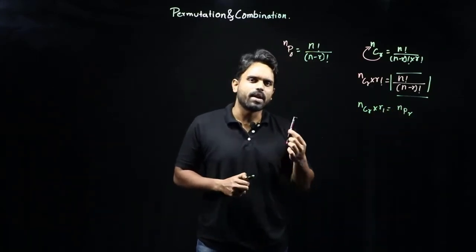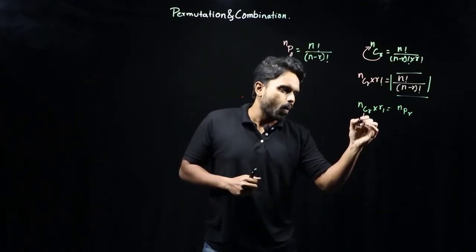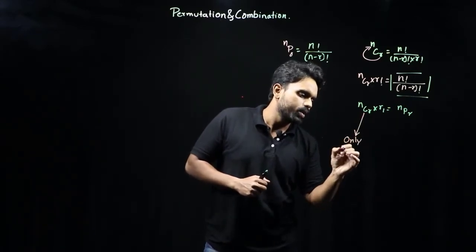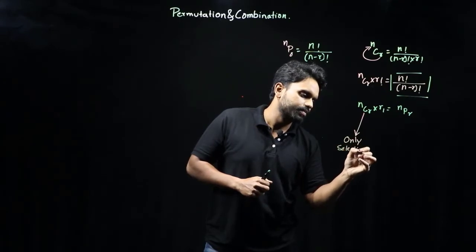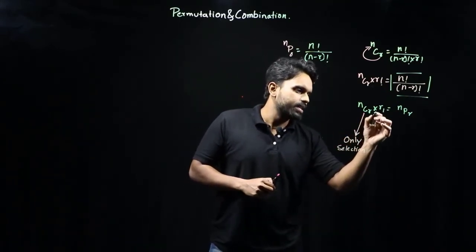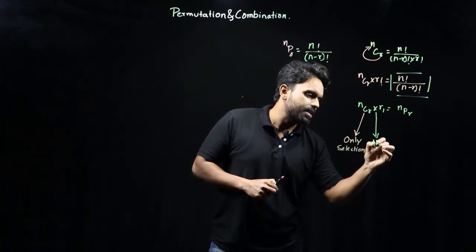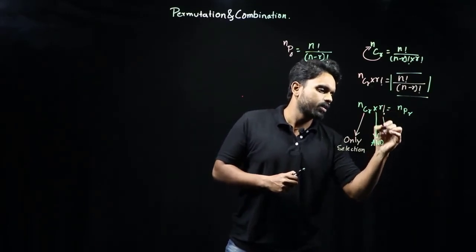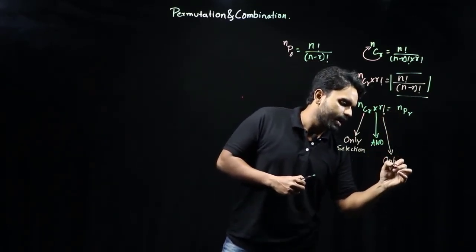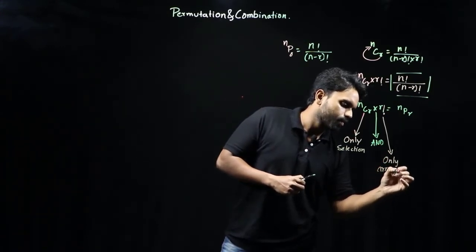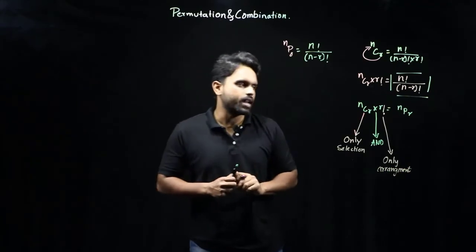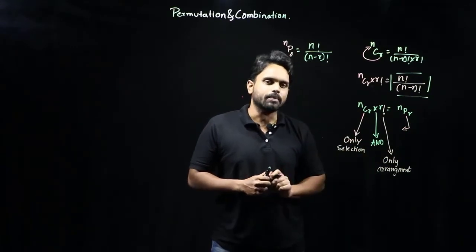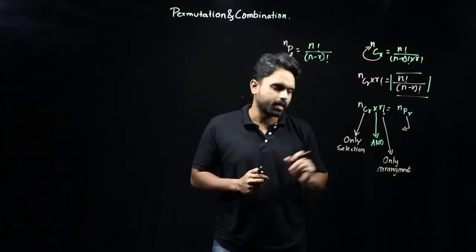So what did we learn? NCR is only selection; R! is only arrangement; and NPR is selection and arrangement. Multiplication is represented by AND. Why R! represents only arrangement — that you will understand in time to come.